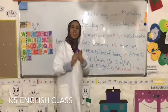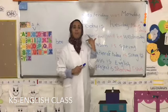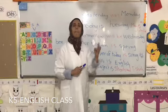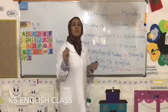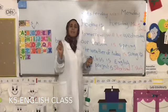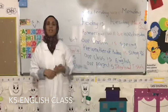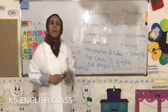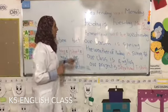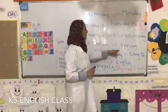The first month is January, February, March, April, May, June, July, August, September, October, November, and December is the last month. Here we have our season is spring.